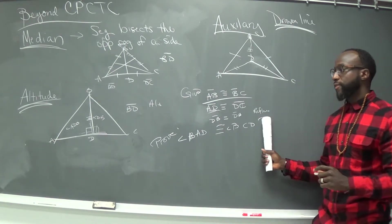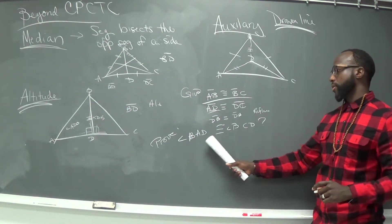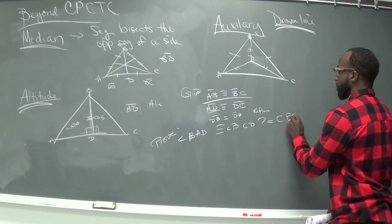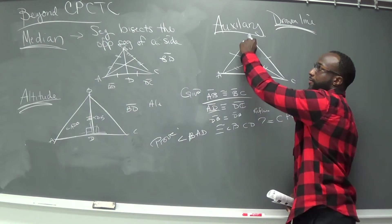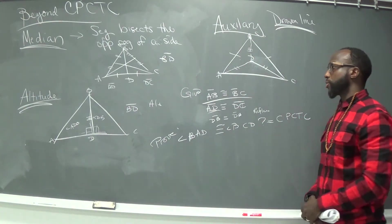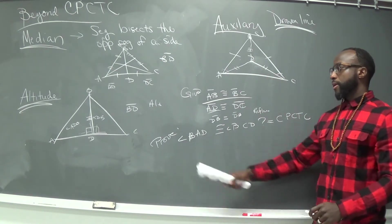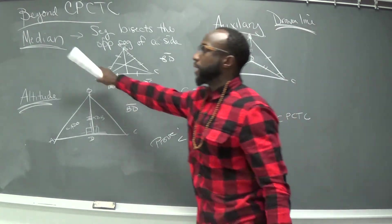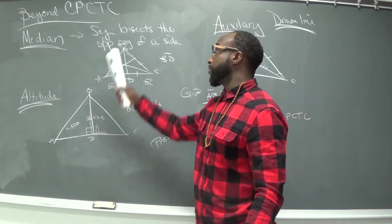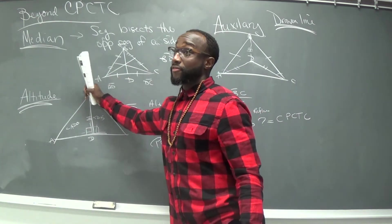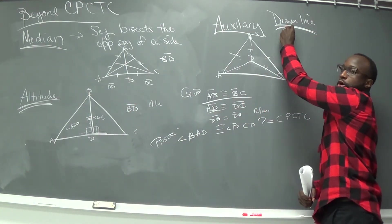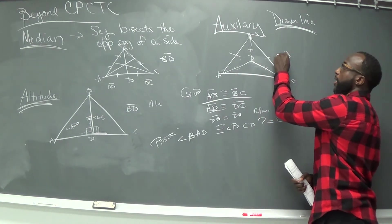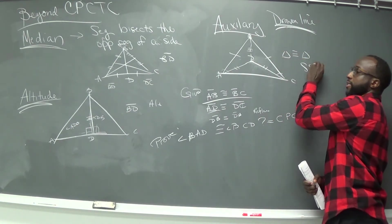Because you can prove that by reflexive property, you can say that the triangles are congruent based on side-side-side. Then the angles are congruent by CPCTC — because if all the sides are congruent, then all the corresponding angles can be congruent. This would be a corresponding part. So the key tool here is the auxiliary line — we draw it ourselves.